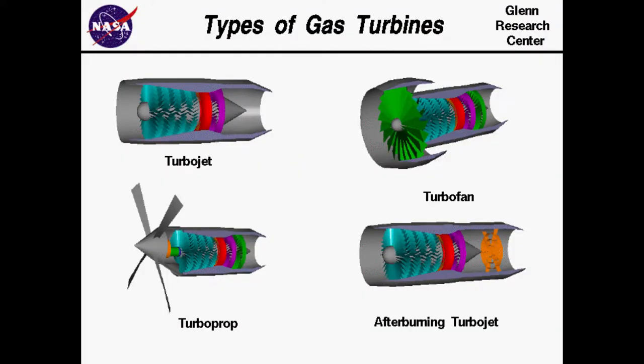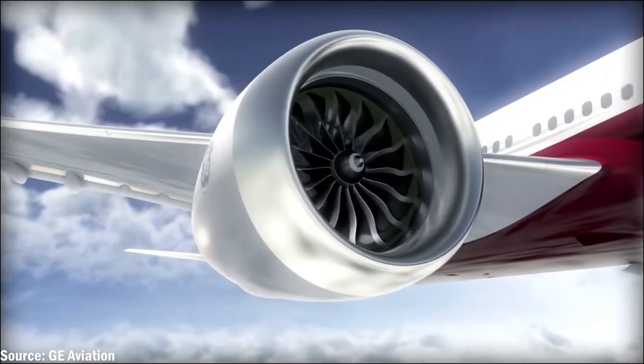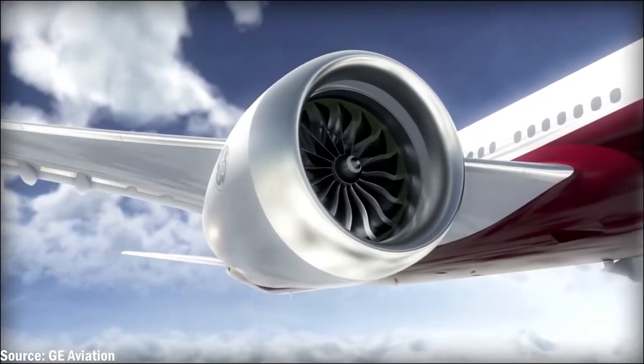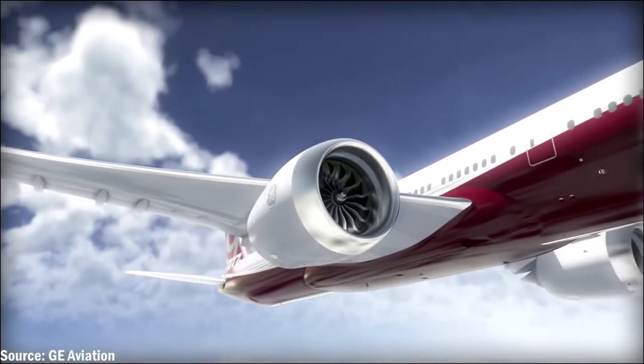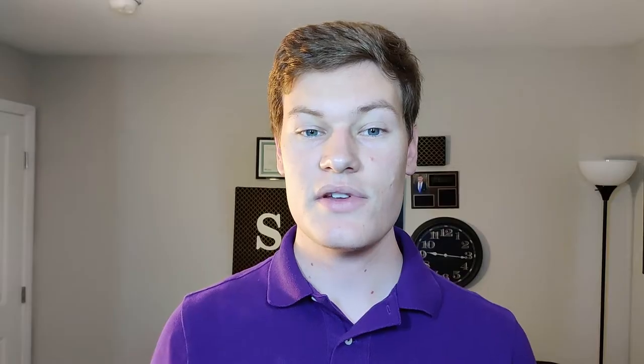There are two basic types of jet engines I'm going to talk about in this video: turbofan engines and turbojet engines. Turbofan engines are mostly used in commercial aviation — so much so that almost every single commercial airliner uses turbofan engines. This is due to the fact that turbofan engines are the most efficient engines at transonic speeds.